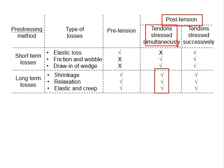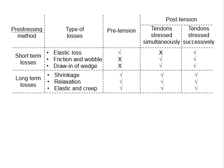As for the long-term losses, the post-tensioning method with all tendons stressed simultaneously will have all long-term losses, including shrinkage, steel relaxation, and creep of concrete.